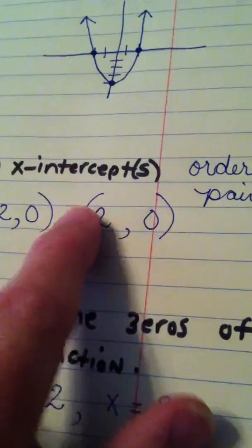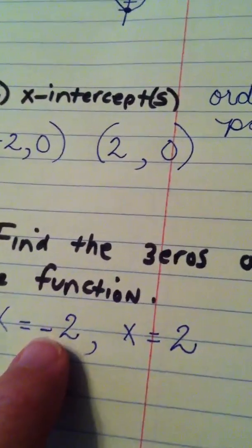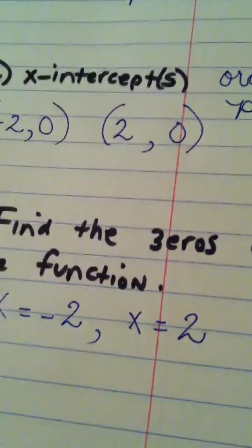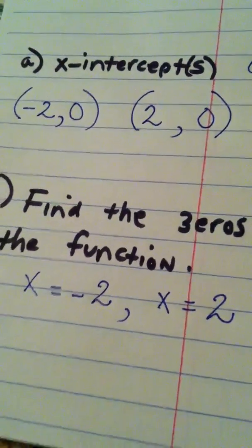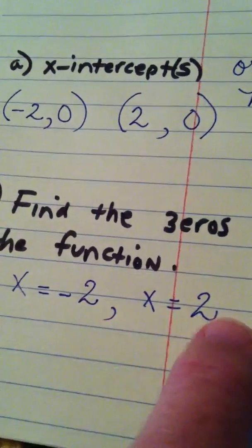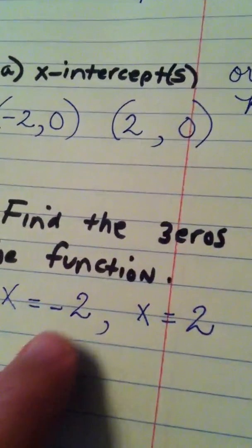Okay? So, x-intercepts are ordered pairs. Zeros of a function are the x values that we've taken out of the x-intercept. And also, if I plugged these x values directly into the function, I would get 0. And watch that.